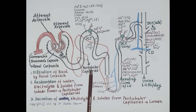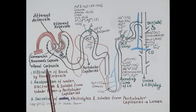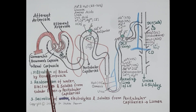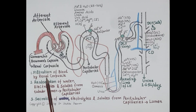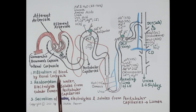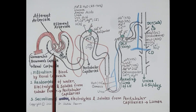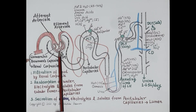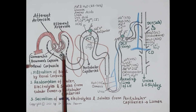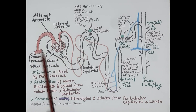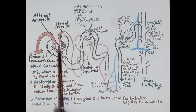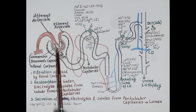Look at this diagram showing the structure of the nephron. This structure shows the renal corpuscle, which acts like a filtration unit and is responsible for the filtration of blood. The first step in the formation of urine is the filtration of blood by the renal corpuscle. The renal corpuscle is composed of the glomerulus, a tuft of capillaries, and Bowman's capsule.